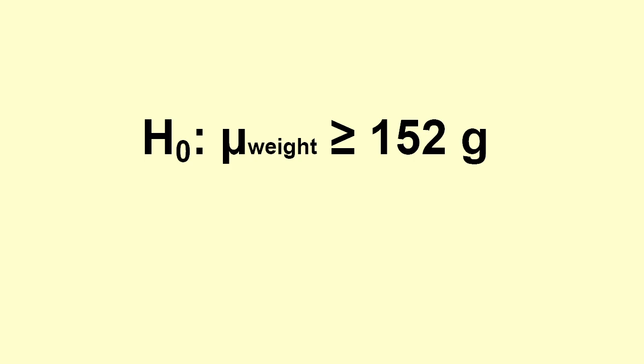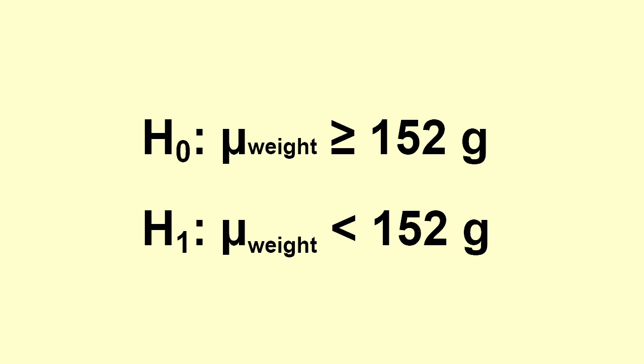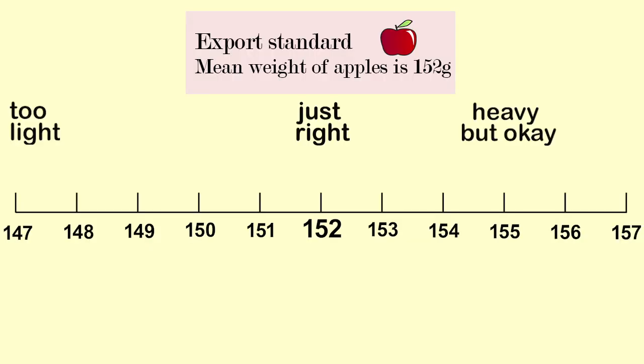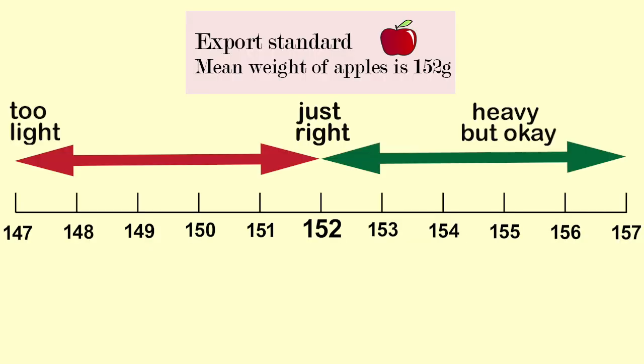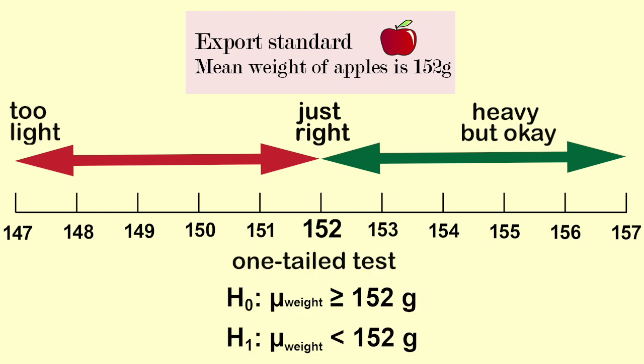The null hypothesis is that the mean weight of the apples in the orchard is 152 grams. The alternative hypothesis is that the mean weight of the apples in the orchard is less than 152 grams. Because we are only concerned if the apples are too light, we will do a one-tailed test.